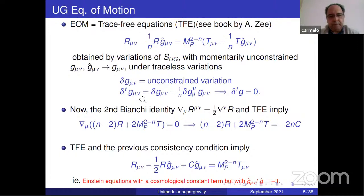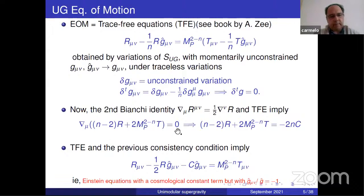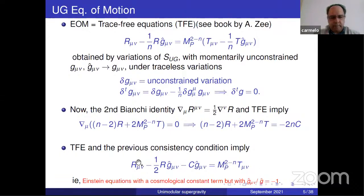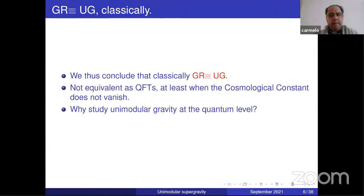From the traceless equation, using the second Bianchi identity, one finds that the covariant derivative of the combination of the scalar curvature and the trace of the energy-momentum tensor vanishes — so it is an integration constant. Putting this back gives the standard Einstein equations with a cosmological constant, but with the metric restricted by the unimodular condition. Classically, general relativity is equivalent to unimodular gravity. They are not equivalent as quantum field theories, at least when the cosmological constant is not zero. If the cosmological constant is set to zero, it is believed — though there is no general proof — that general relativity is completely equivalent to unimodular gravity as quantum field theories.